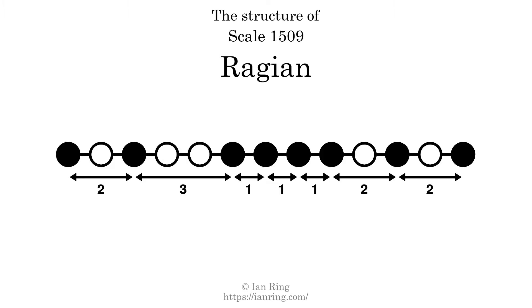The structure of a scale is a description of the interval distance between each successive tone. This scale has a structure of 2, 3, 1, 1, 1, 2, 2.